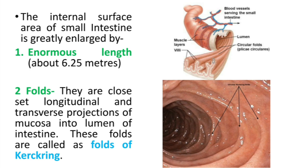In this slide you can see two images. The first image is of the small intestine showing the lumen with circular folds. The second image is of the human small intestine through endoscopy, in which the folds of Kerckring can be seen projecting into the lumen of the intestine.